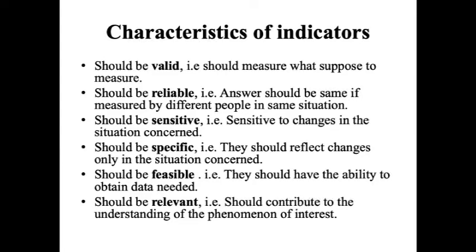What should an indicator have? An indicator should be valid — it should measure what it is supposed to measure. It should be reliable — the answer should be the same if measured by different people in the same situation at different places. It should be sensitive to changes in the situation concerned, and specific — reflecting changes only in the situation concerned. It should be feasible, having the ability to obtain the data needed, and should be relevant, contributing to the understanding of the phenomena of interest.